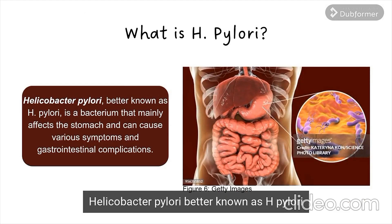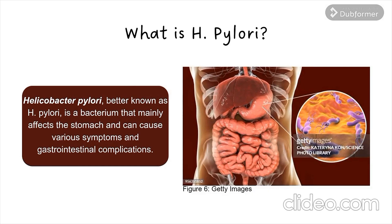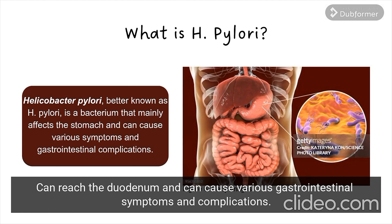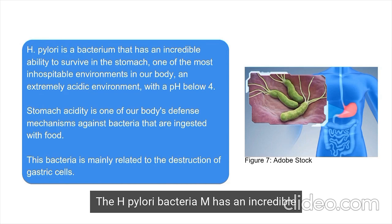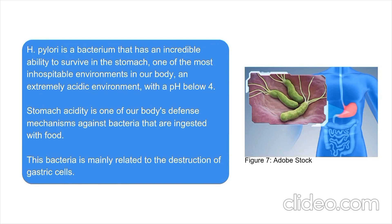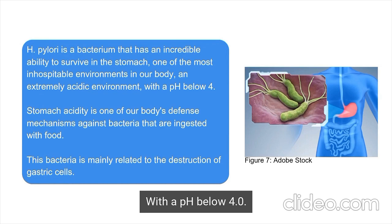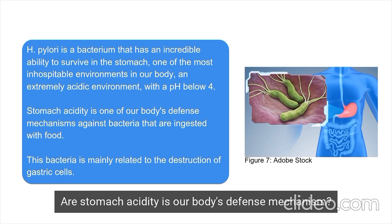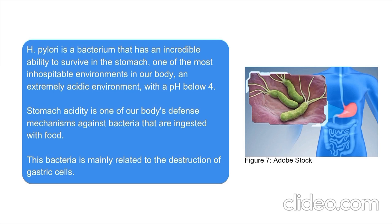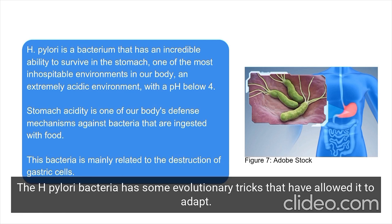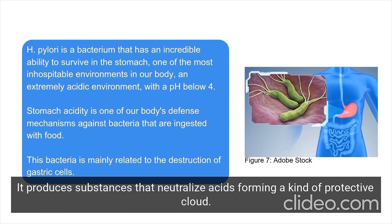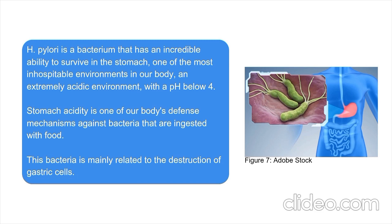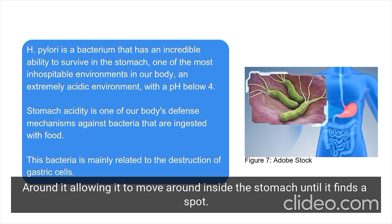Helicobacter pylori, better known as H. pylori, is a bacterium that mainly affects the stomach. It can reach the duodenum and can cause various gastrointestinal symptoms and complications. The H. pylori bacterium has an incredible ability to survive an extremely acidic environment with a pH below 4.0. Our stomach acidity is our body's defense mechanism. H. pylori has some evolutionary tricks that have allowed it to adapt to such a hostile environment. It produces substances that neutralize acids, forming a kind of protective cloud around it, allowing it to move around inside the stomach until it finds a spot to settle in.